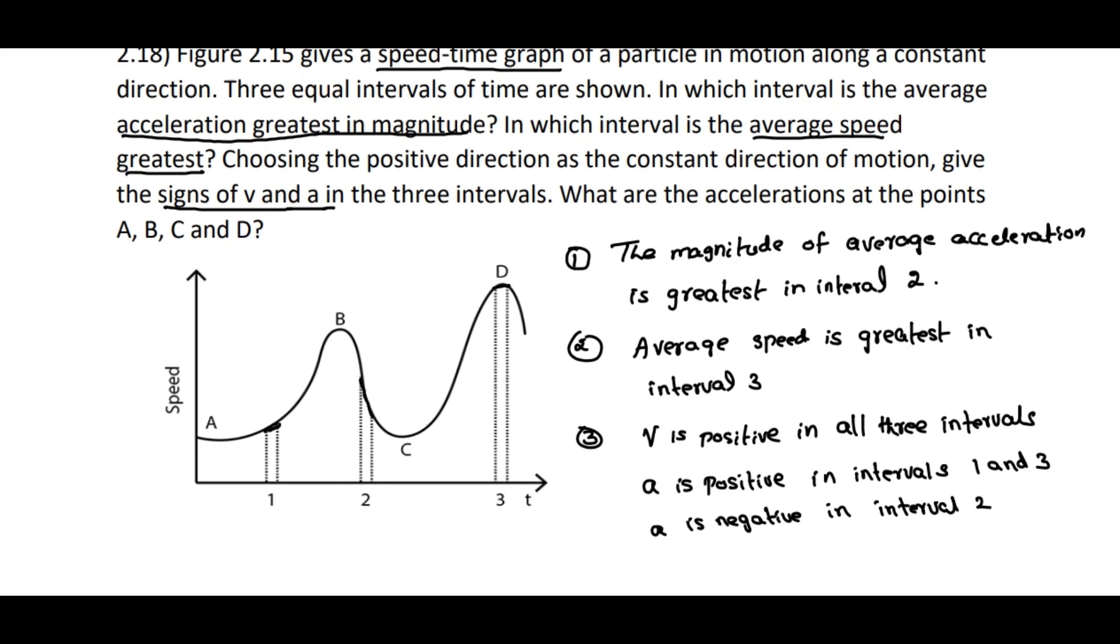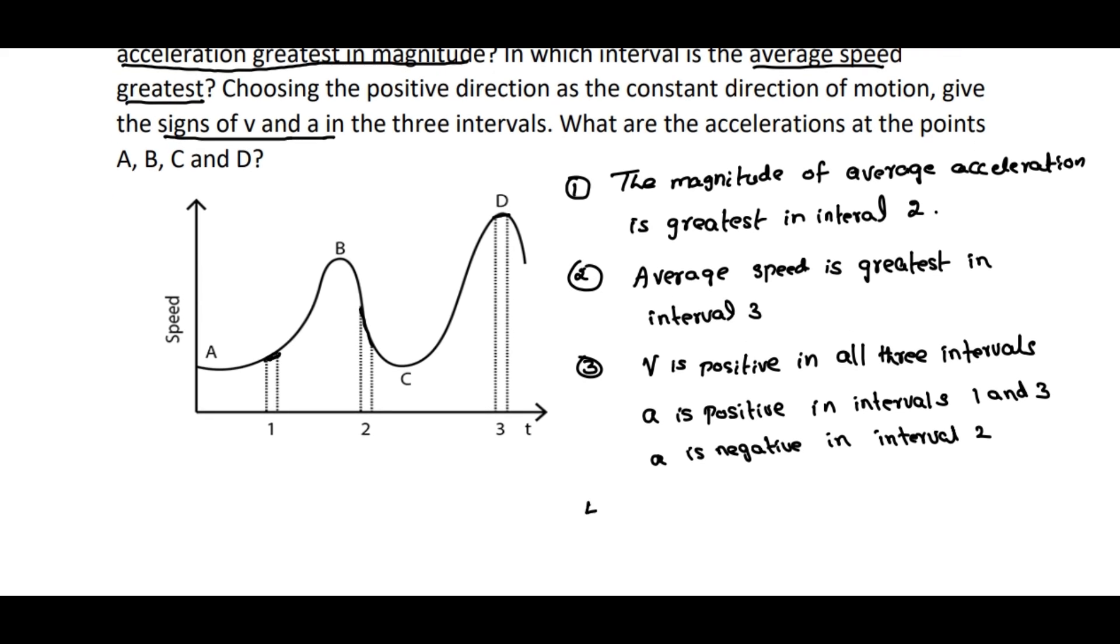And one more sub-question: what are the accelerations at the points A, B, C, and D? At A, it almost looks like speed is constant, so the slope of speed here will be zero. At B, it is the peak value, maximum value. d by dt of this maximum value will be zero, that is slope is zero.